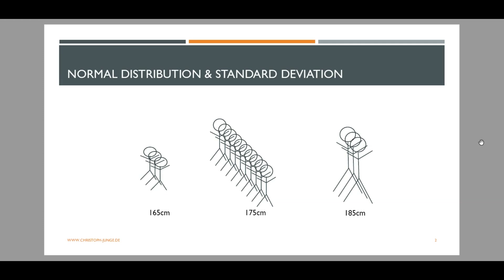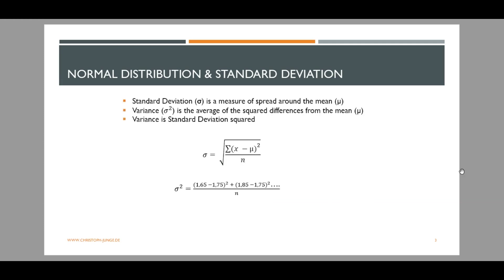But what is the standard deviation of the height of this population, and what is standard deviation at all? Standard deviation, denoted by the Greek letter sigma, is a measure of spread around the mean, in the same unit as the mean. So in this case, centimeters. But it could also be percentages, dollars, meters, whatever.